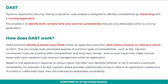This also includes unusual inputs that might uncover issues with input validation and memory management within an application. Based on the application's response to various inputs, the DAST tool identifies whether or not it contains a particular vulnerability. For example, if an SQL injection attack provides unauthorized access to data, or an application crash due to invalid or malformed input, then this indicates an exploitable vulnerability.